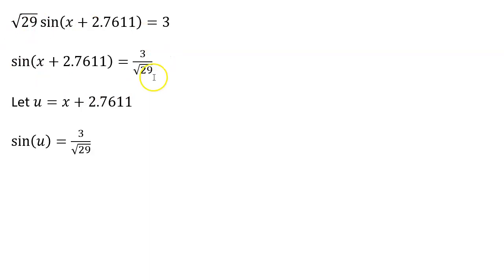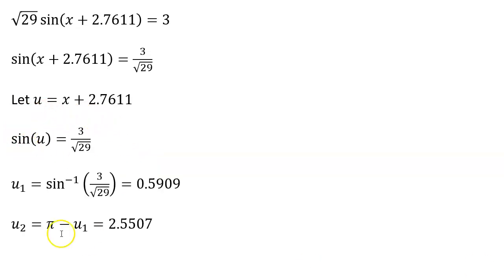And then my equation becomes a much nicer looking sine of u equals 3 over root 29. And this equation I know how to solve, right? I can find my first solution by doing the sine inverse, and that gives me an angle in the first quadrant.